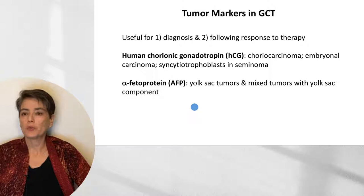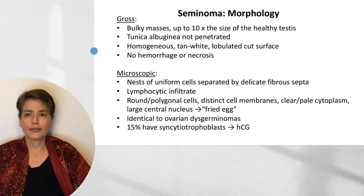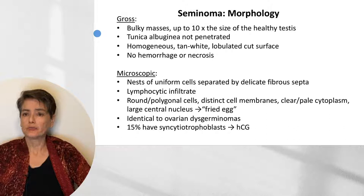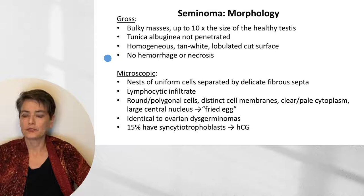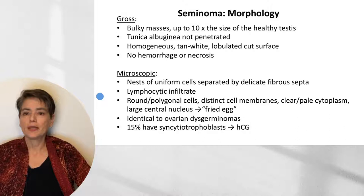Seminomas can be bulky masses, up to 10 times the size of the healthy testis, because they are indolent tumors. This indolence is reflected in the fact that the tunica albuginea is typically not penetrated. On cut section, we will see a homogeneous, tan-white, lobulated cut surface that lacks hemorrhage and necrosis. Microscopically, there is a very characteristic appearance of nests of uniform cells separated by delicate fibrous septa, with a characteristic lymphocytic infiltrate. The cells are round to polygonal with distinct cell membranes and clear to pale cytoplasm with a large central nucleus that has been likened to a fried egg.